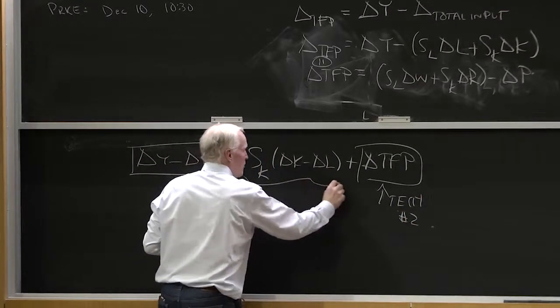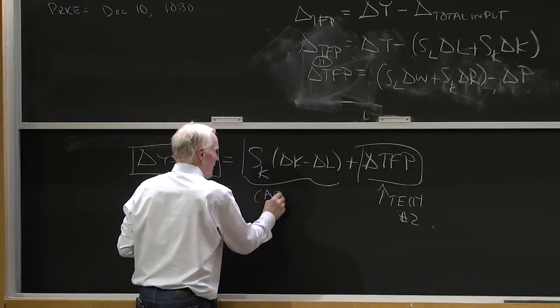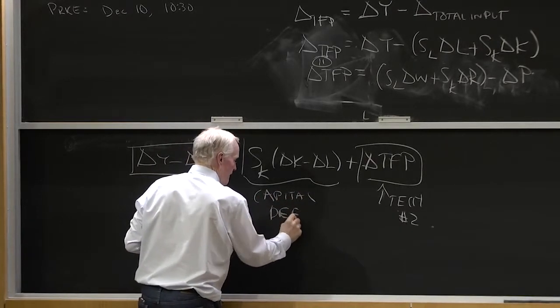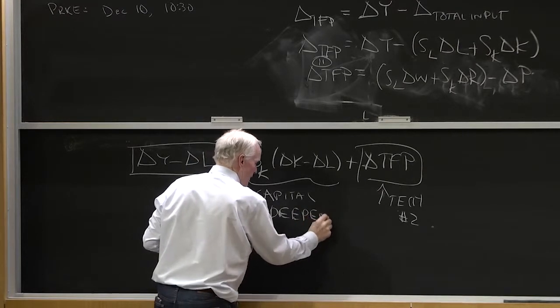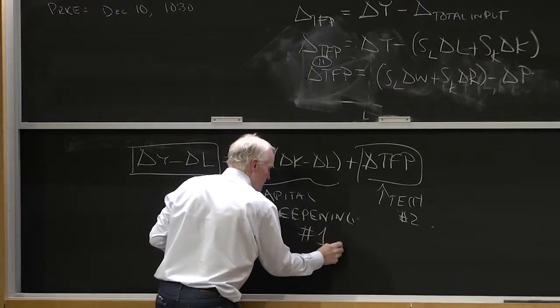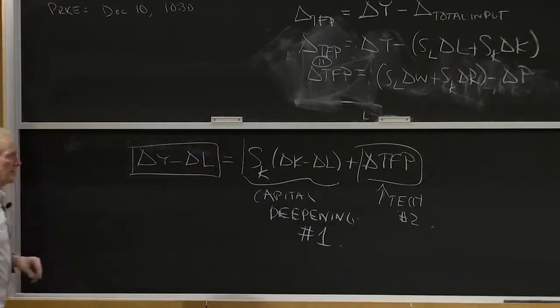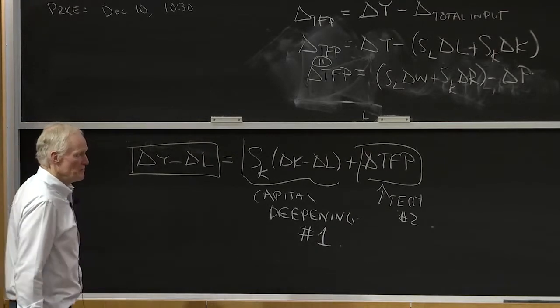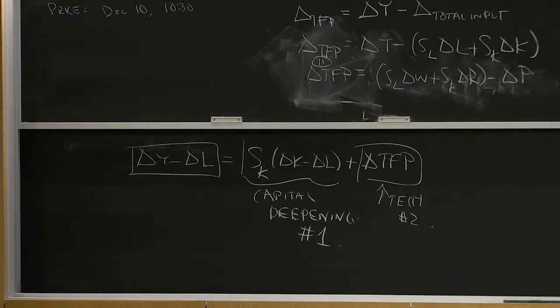And this is what we call capital deepening. That's number one that I put on the board, right? These numbers are not how important they are. They're just the numbers I put up earlier. There's no significance to the order. All right. So that would be a way to think about growth in labor productivity.